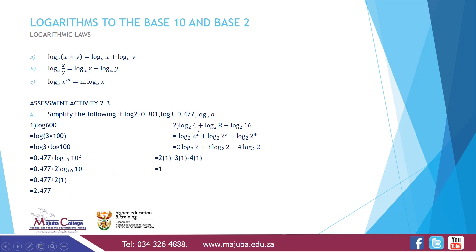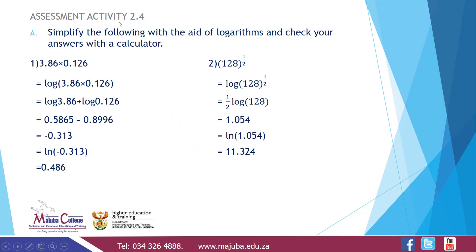Next: log base 2 of 4 plus log base 2 of 8 minus log base 2 of 16. We rewrite as log base 2 of 2 squared plus log base 2 of 2 cubed minus log base 2 of 2 to the 4th. Applying law 3, this becomes 2 log base 2 of 2 plus 3 log base 2 of 2 minus 4 log base 2 of 2. Since log base 2 of 2 equals 1, we get 2 plus 3 minus 4 equals 1.